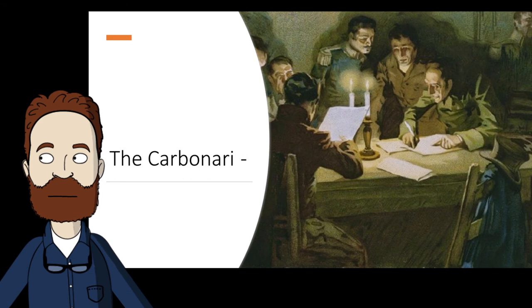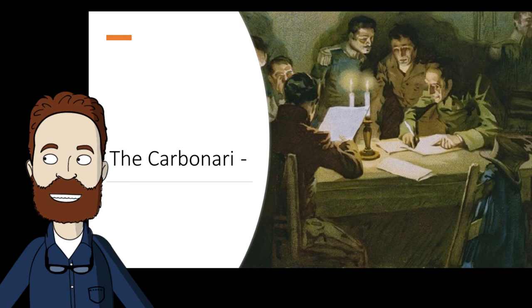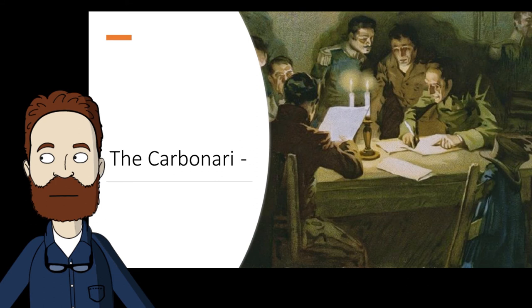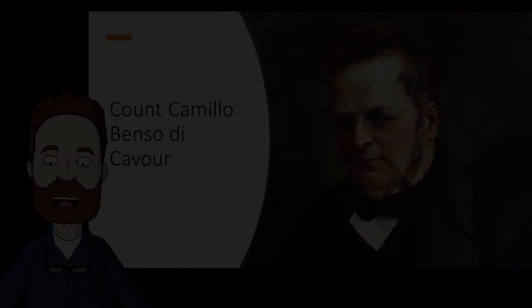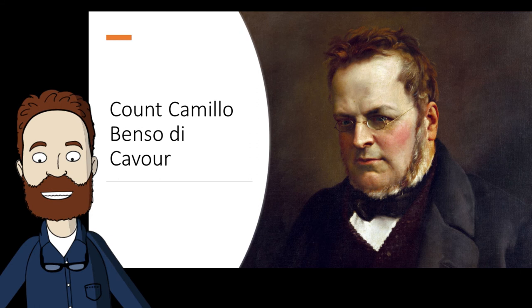The Carbonari — the Italian word for charcoal makers — was an informal network of revolutionary societies active in the early parts of Italian unification. They have also been credited with influencing other revolutionary groups in France, Greece, Spain, Brazil, and Uruguay. After the early popular revolts in Italy were put down, Austria remained vigilant to suppress any future disturbances.